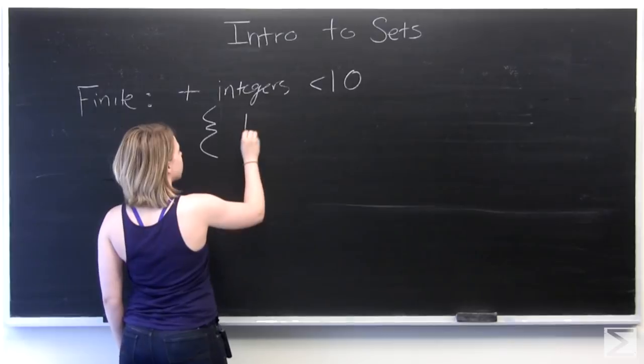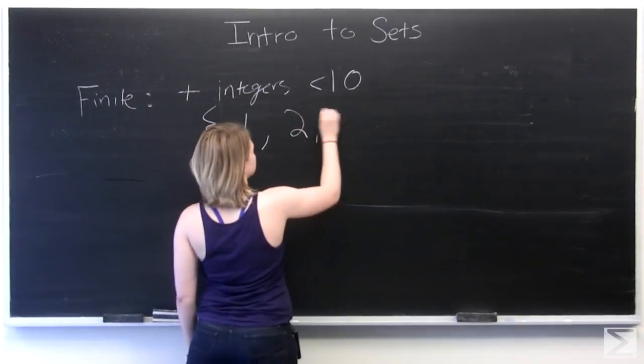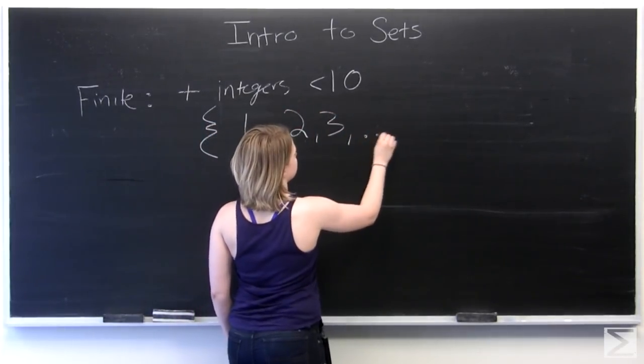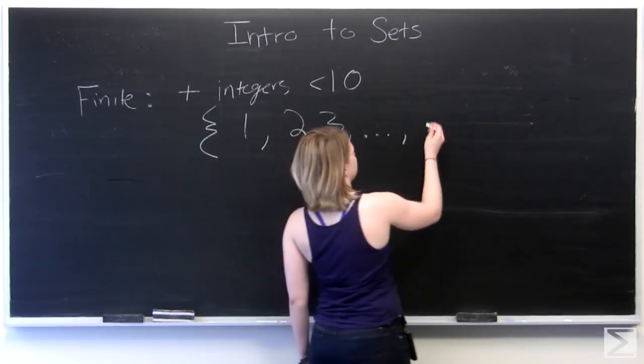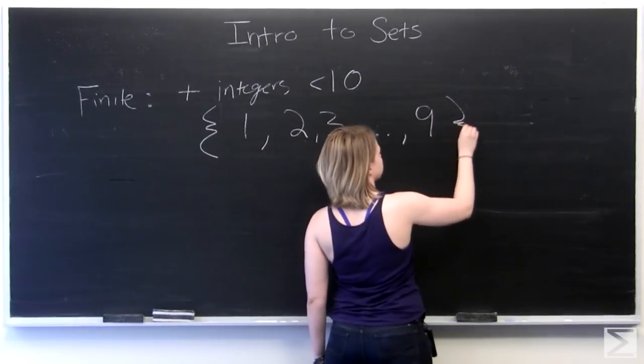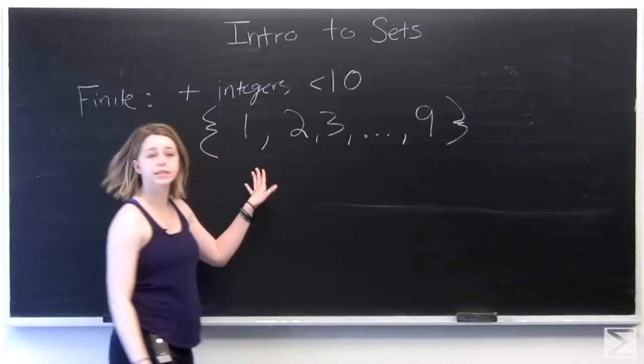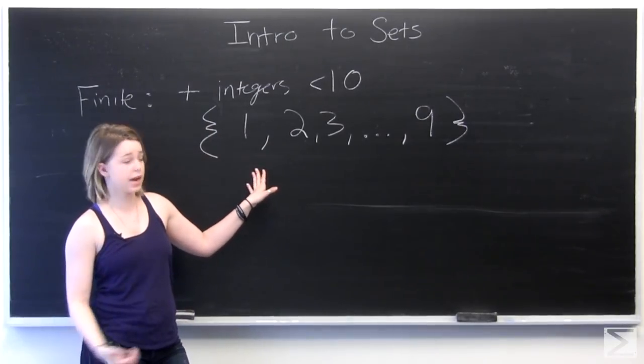So we've got 1, 2, 3, and we can use an ellipsis here all the way to 9. So this is our set of positive integers fewer than 10.